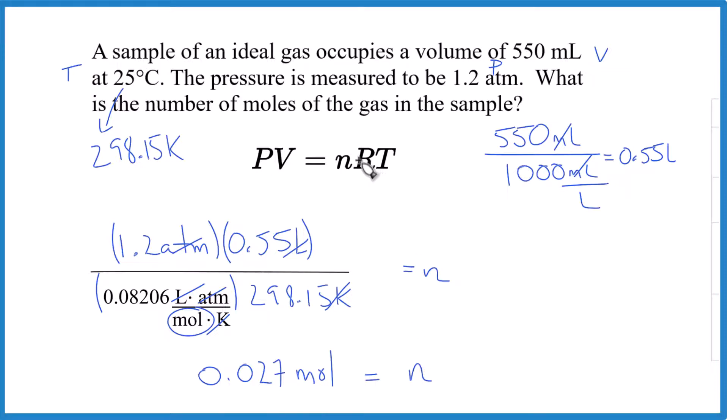That's it. The key is make sure the value for R, since we have atm, this is the value we'll use. And then make sure you have Kelvin as your degrees and then liters as your volume. That's it. This is Dr. B. Thanks for watching.